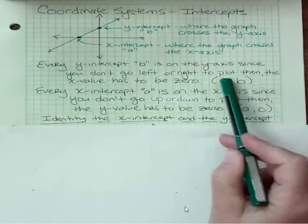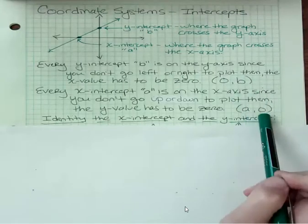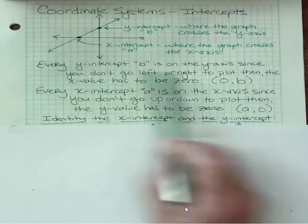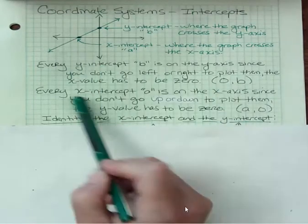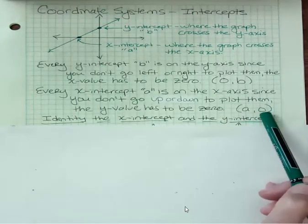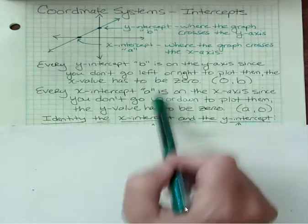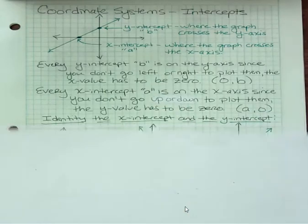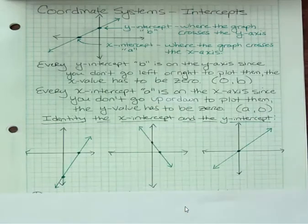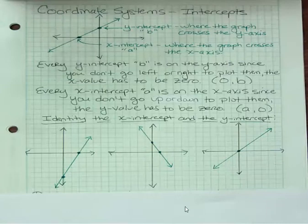Notice that both intercepts have zeros in the opposite place. A y-intercept has an x that's zero. An x-intercept has a y that's zero. And that's explained in these sentences. So in these particular pictures, identify the x-intercept and the y-intercept. I could number them to make them a little more helpful.